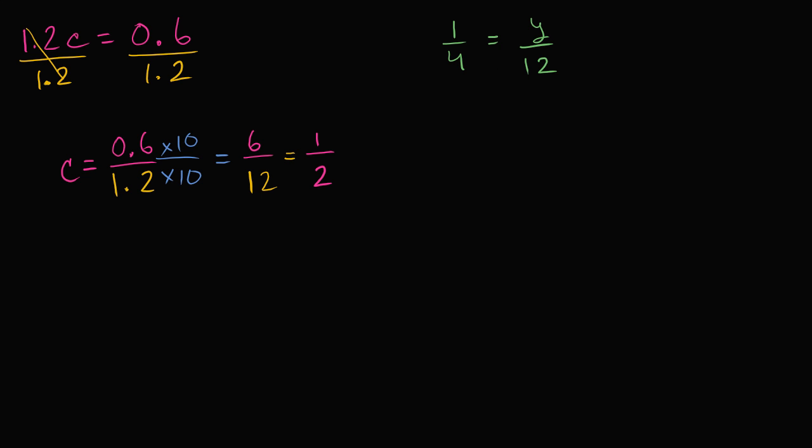Let me do that in yellow. So if I multiply the right hand side by 12, I have to multiply the left hand side by 12. And once again, why did I pick 12? Well I wanted to multiply by some number that when I multiply it times y over 12, I'm just left with y. And so y times 12 divided by 12, well that's just going to be 1. And then on the left hand side, you're going to have 12 times 1 fourth, which is 12 fourths.